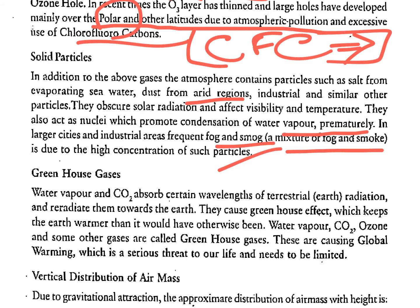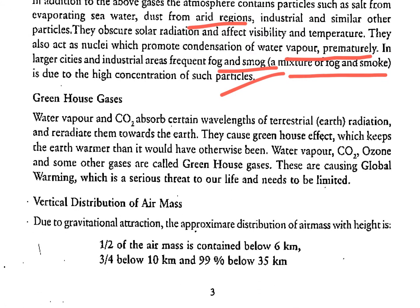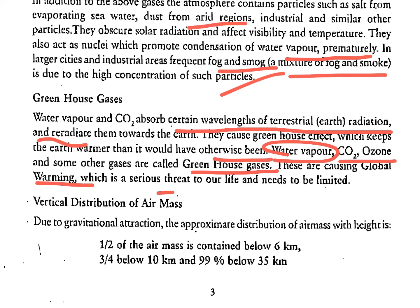Greenhouse gases such as water vapour and carbon dioxide absorb certain wavelengths of terrestrial radiation and radiate them back towards the Earth, causing the greenhouse effect which keeps the Earth warmer than it would otherwise be. Water vapour, carbon dioxide, ozone, and some other gases are called greenhouse gases — these are causing global warming, which is a serious threat to life.